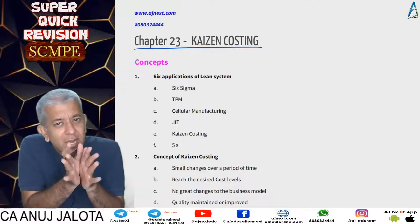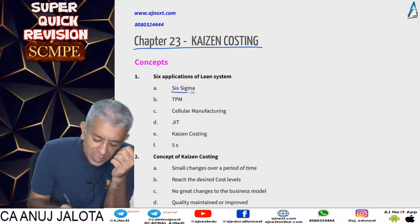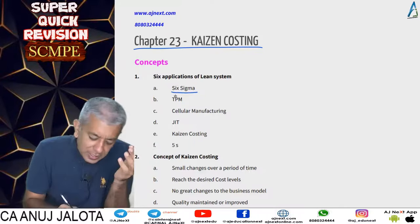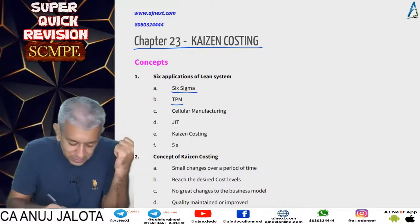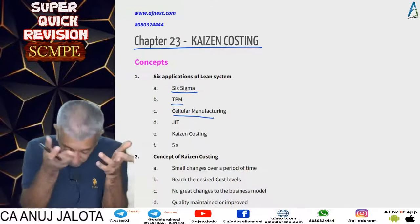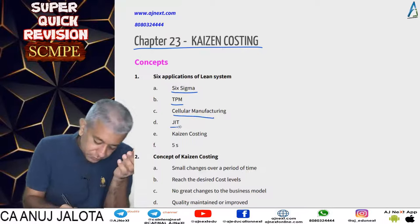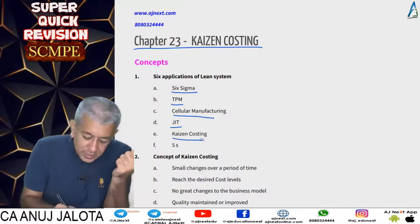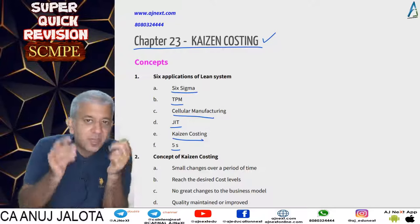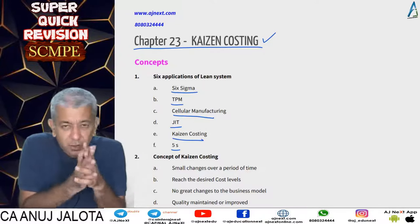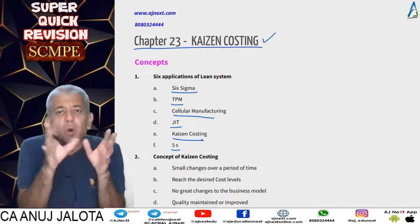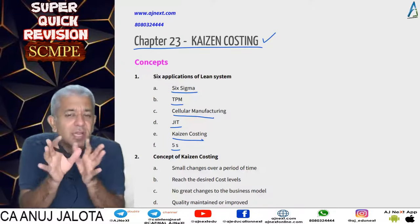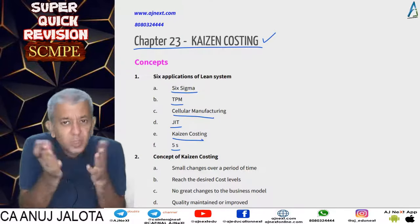Lean systems in all has six applications: Six Sigma technique touched upon in TQM, TPM, cellular manufacturing, JIT, Kaizen Costing which we are doing right now, and 5S. Now 5S you are going to get in your theory section — it covers how to organize your office so that cluttering of files and things is reduced.